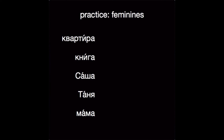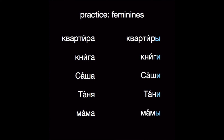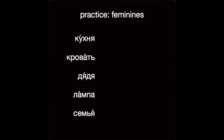Let's practice and see if you can get the genitive form before it appears on the screen, and say why it's spelled the way it is. Квартира → квартиры. Книга → книги. Саша → Саши — those two take И because of the seven-letter spelling rule. Таня → Тани — И here because it's a soft stem. Мама → мамы. Кухня → кухни — soft stem. Кровать → кровати. Дядя → дяди — soft stem again. Лампа → лампы. Семья → семьи.